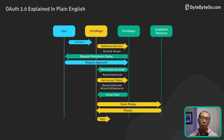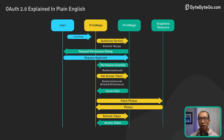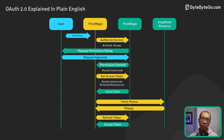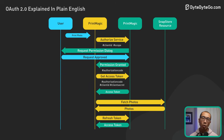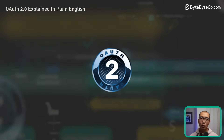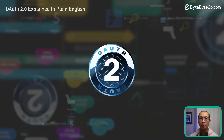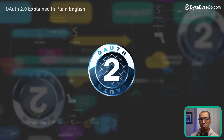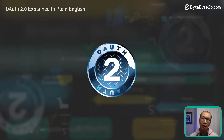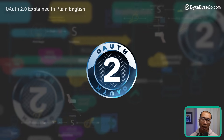OAuth 2 also supports refresh tokens, which can be used to obtain a new access token when the current one expires, without requiring our intervention. That's OAuth 2 in a nutshell — an essential piece of the web security infrastructure and the backbone of many secure, seamless app interactions we use daily.